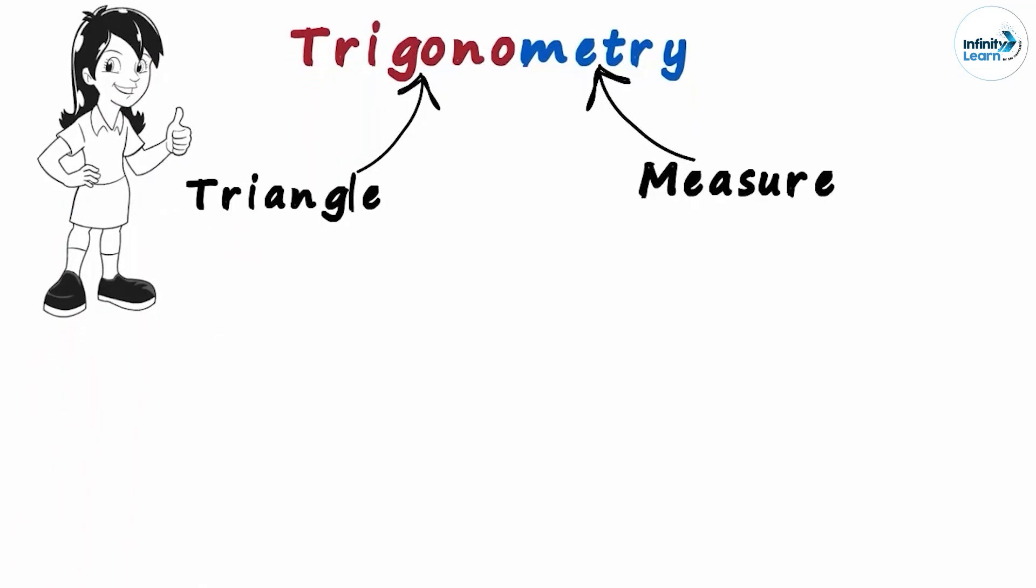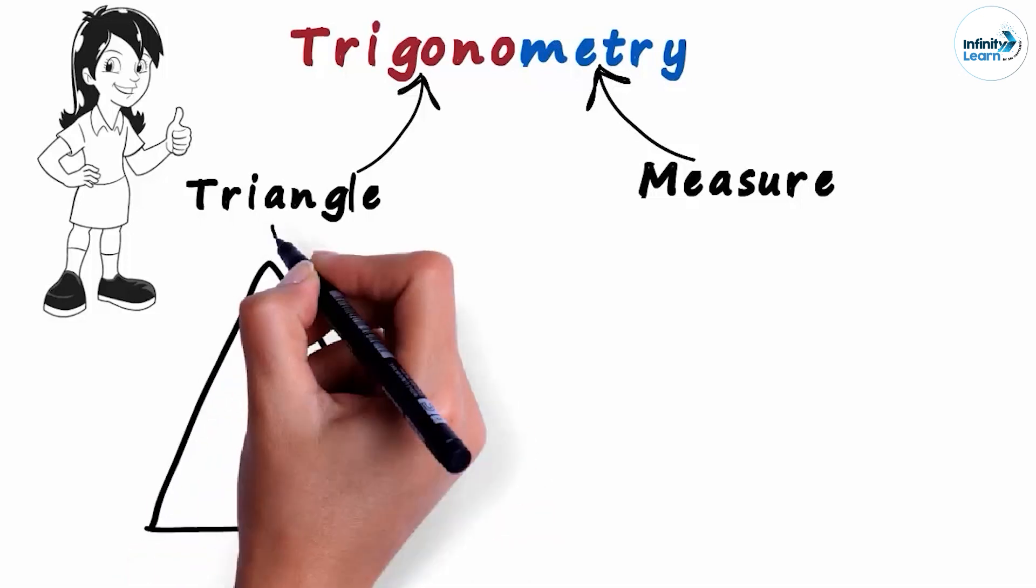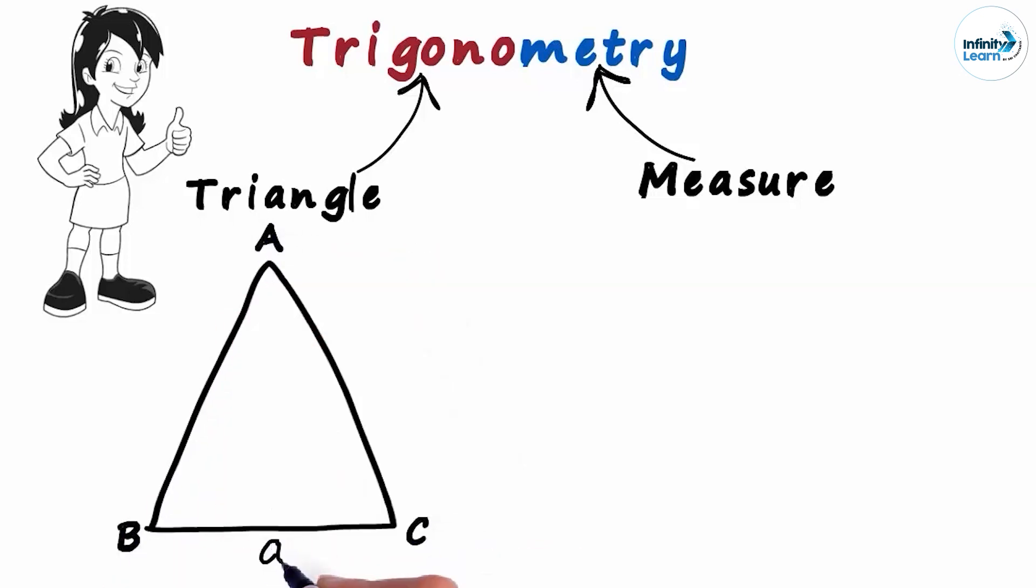Let's consider a triangle ABC. Let A be the length of the side opposite angle A and similarly let B and C be the lengths of the sides opposite angles B and C respectively.